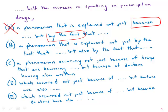Answer B reads: 'a phenomenon that is explained not just by the fact that, but also by the fact that.' That is wordy and awkward, but technically it does have correct parallel structure. We'll put a question mark there and get back to it — we hope to find something better.